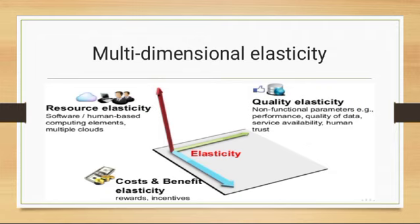Multi-dimensional elasticity: Resource elasticity consists of software or human-based computing elements or multiple clouds. Quality elasticity consists of non-functional parameters, for example performance, quality of data, service availability and human trust.